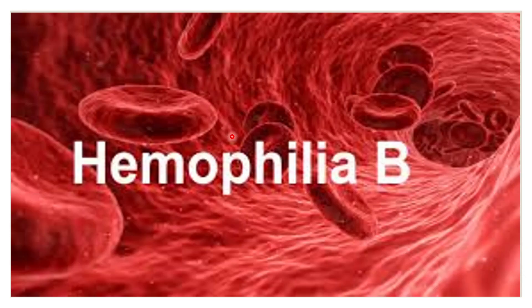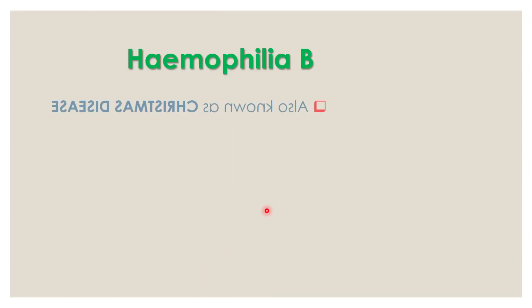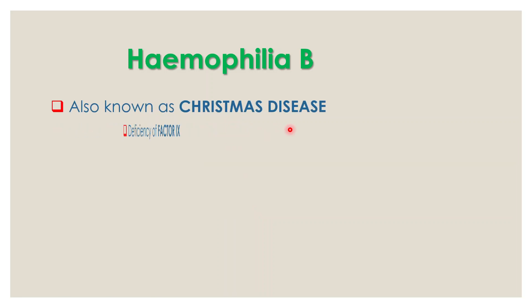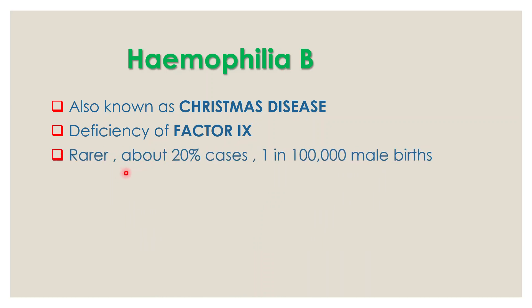Now let us learn about Haemophilia B, also known as Christmas disease. It is caused due to deficiency of Factor IX, whereas Haemophilia A was caused due to deficiency of Factor VIII. Haemophilia B is very rare compared to Haemophilia A — almost 20% of cases — and occurs in 1 in every 100,000 male births.